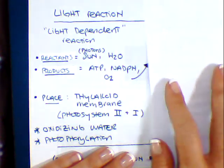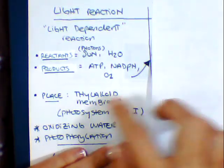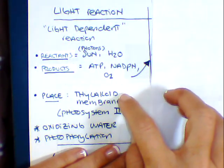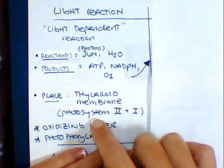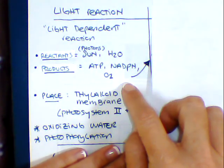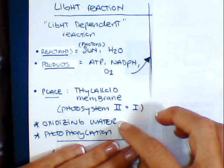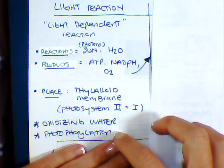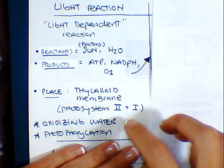Our products that we're going to get from the sale are our two energy molecules as well as some oxygen. Now, I want you to also add to your notes where everything's going to be taking place. The light dependent reaction will take place in the thylakoid membrane itself. We're going to go through what's known as Photosystem 2 and Photosystem 1 in order to make these products. We're going to be learning about oxidizing and photophosphorylation, which is the producing of those electrons and the breaking apart of water into oxygen.